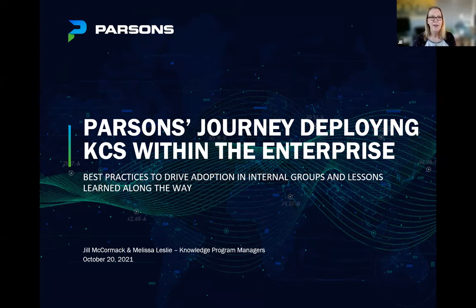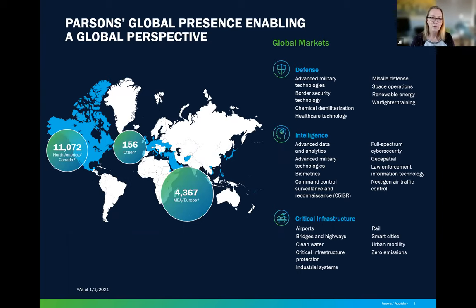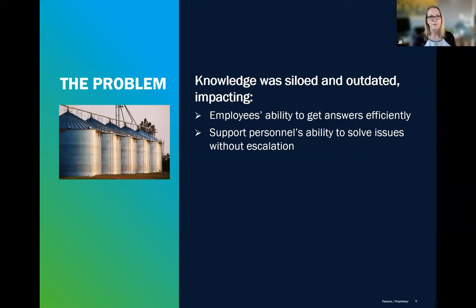Great. Thank you. All right. Hi, everybody. My name is Jill McCormack. I work at Parsons, along with Melissa Leslie, who were the Knowledge Program Managers. And so I'll start just by telling you a little bit about who Parsons is as a company. We are a defense, intelligence and critical infrastructure solutions provider. And we've been in business for more than 77 years at this point. We're a global company with a presence in North America, Canada, the Middle East and many areas in Europe and Asia, as you can see. We employ more than 15,000 employees globally, and we serve lots of markets, including aviation, bridges, cyber, federal infrastructure, rail and transit, road and highway, geospatial, to name just a few, as you can see. So that's just kind of an overview of who Parsons is.